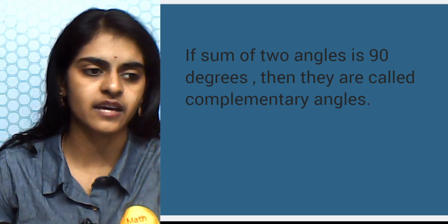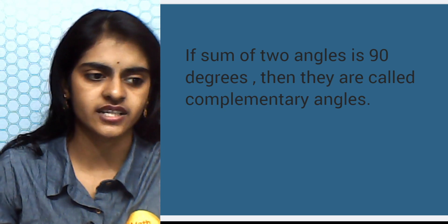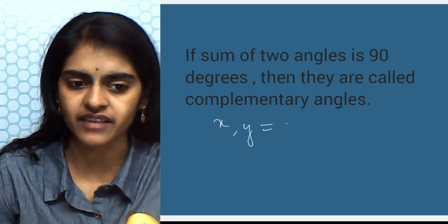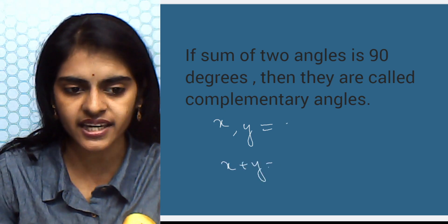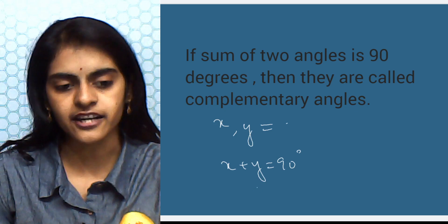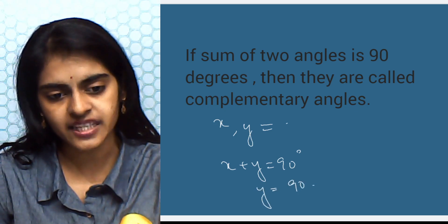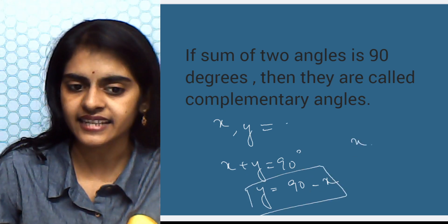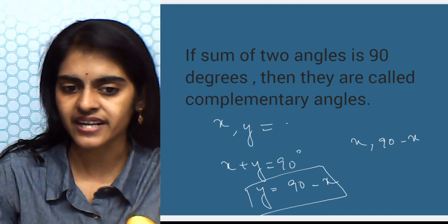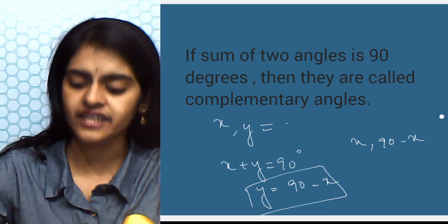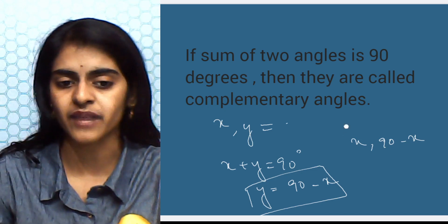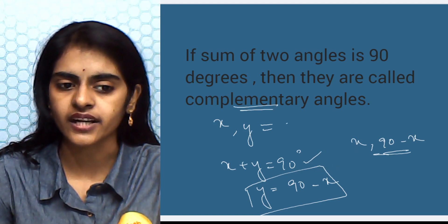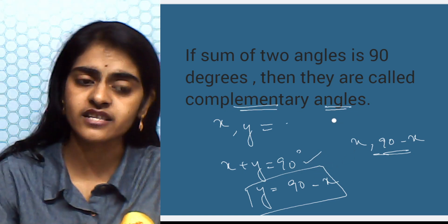If x is one angle and y is another angle, and their sum is 90°, then x + y = 90°, which means y = 90° − x. So if one angle is x, the other angle is 90° − x. If two angles are complementary and one of them is x, then the other is 90° − x, because their sum must be 90°.